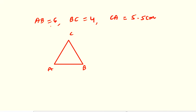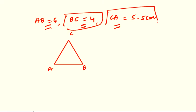AB is given, BC is given, and CA is given. So you can draw AB first, then according to the other dimensions and values you can construct the triangle. So let's start.